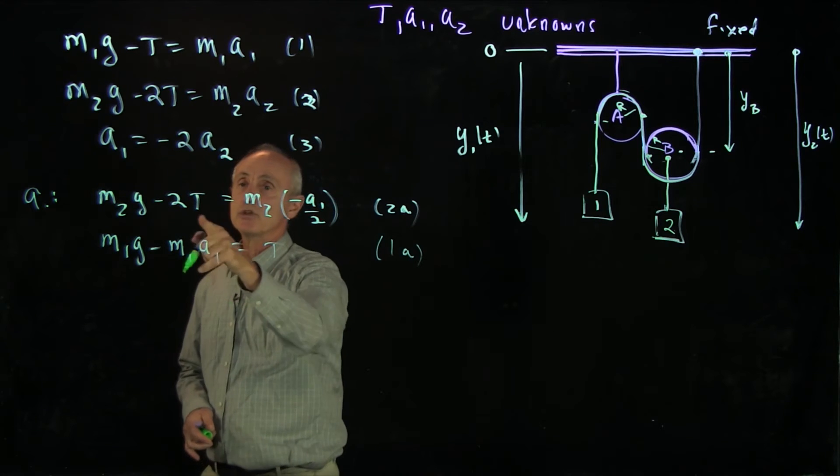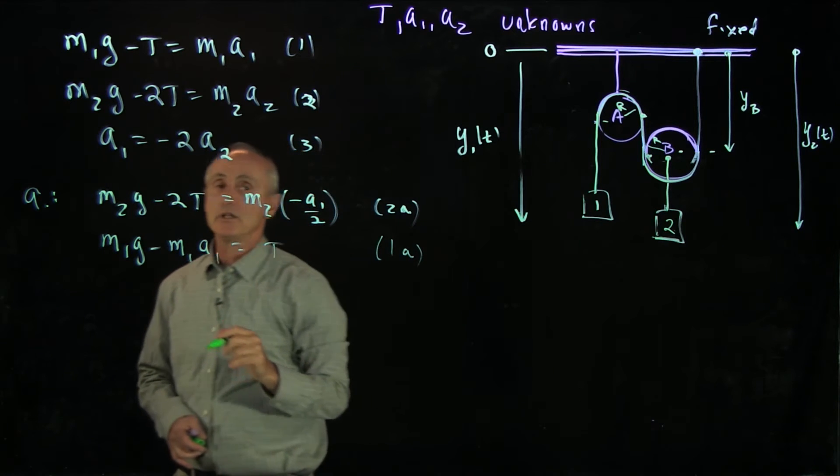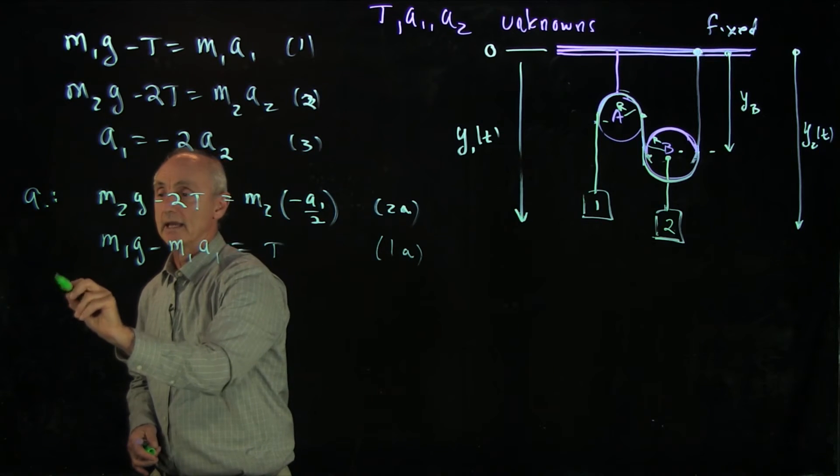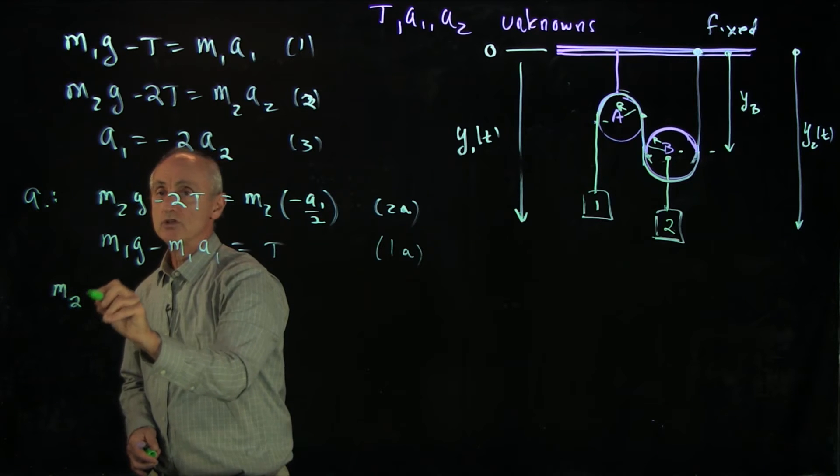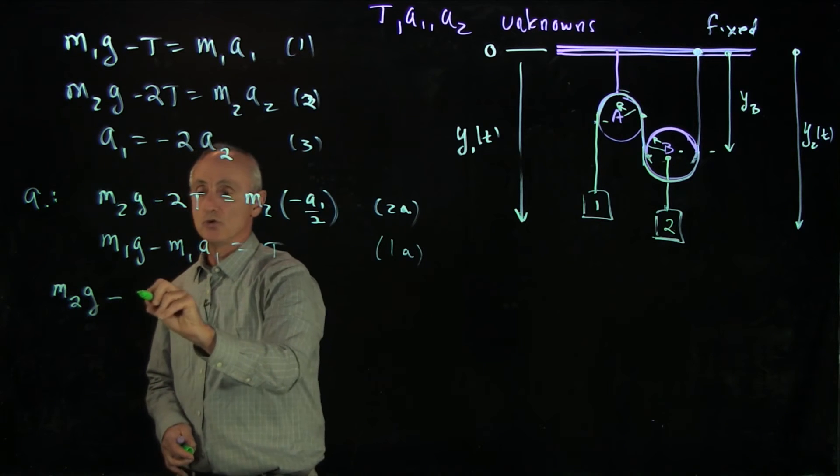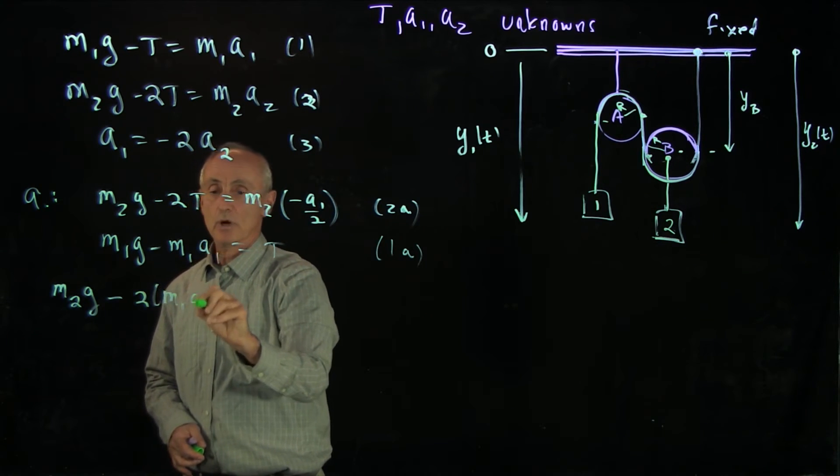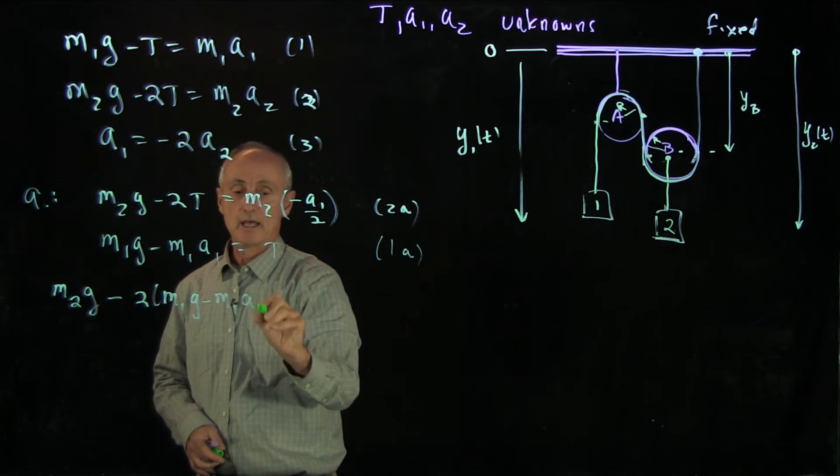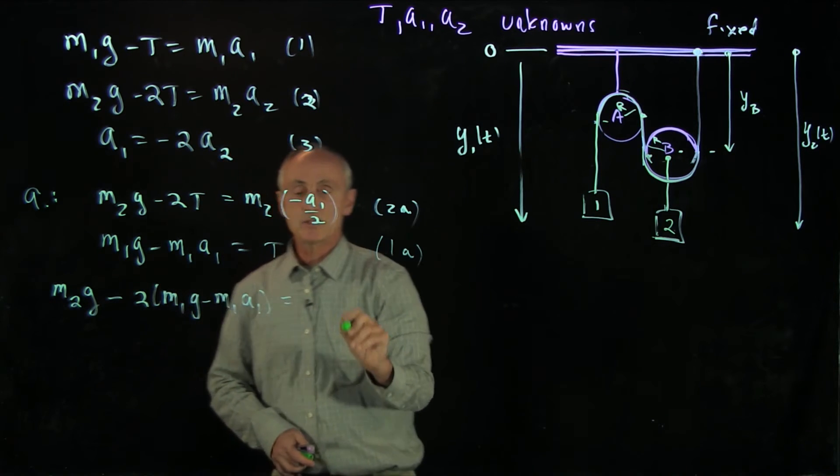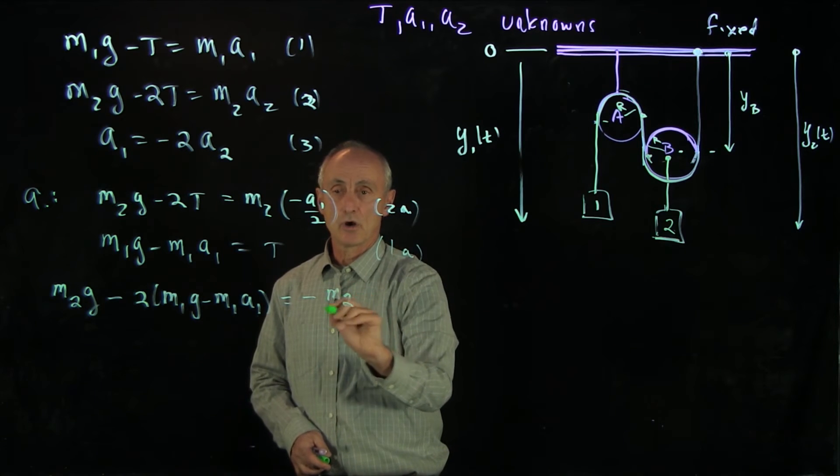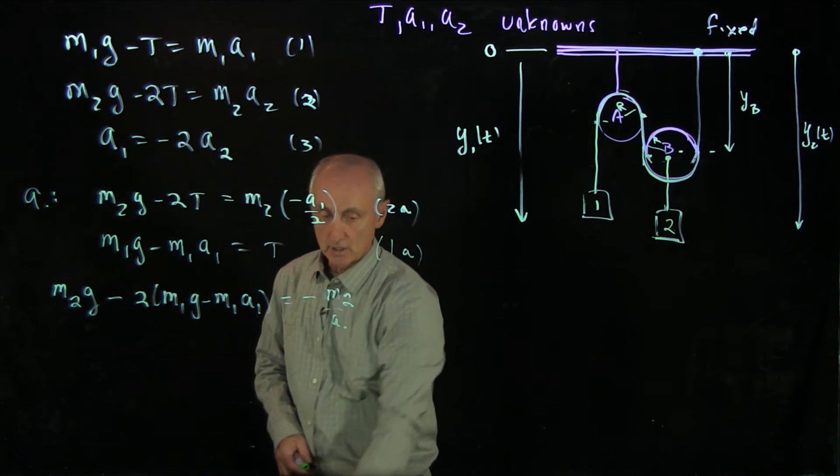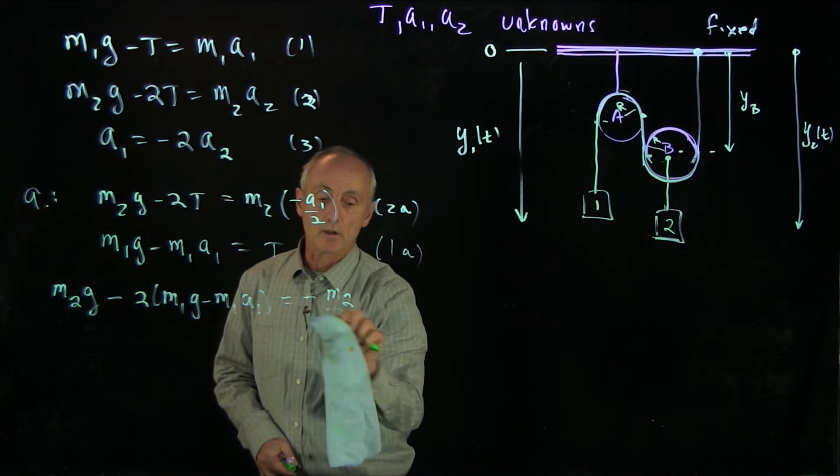And now I can substitute that value of t into equation 2a. And I get m2g minus 2 times m1g minus m1a1, and that's equal to minus m2 over 2 times a1.